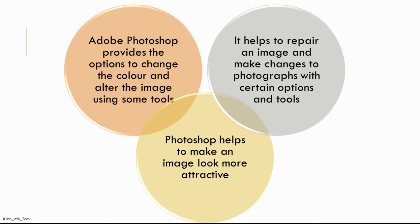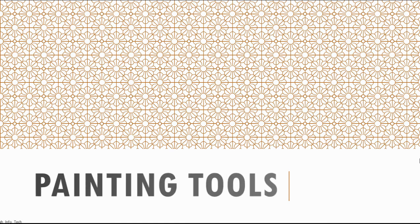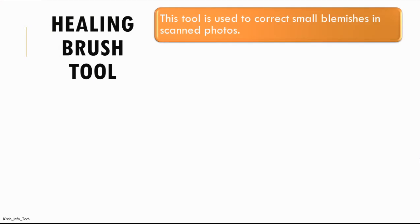The first type is painting tools. Painting tools are used for painting and editing the image color. They are also used to repair damaged images. You can apply repeated patterns or replace the color in the image. In painting tools, the first one is the healing brush tool, which is used to correct small blemishes in scanned photos. Now let me take you to Photoshop and show you how to select the healing brush tool and what it is used for.